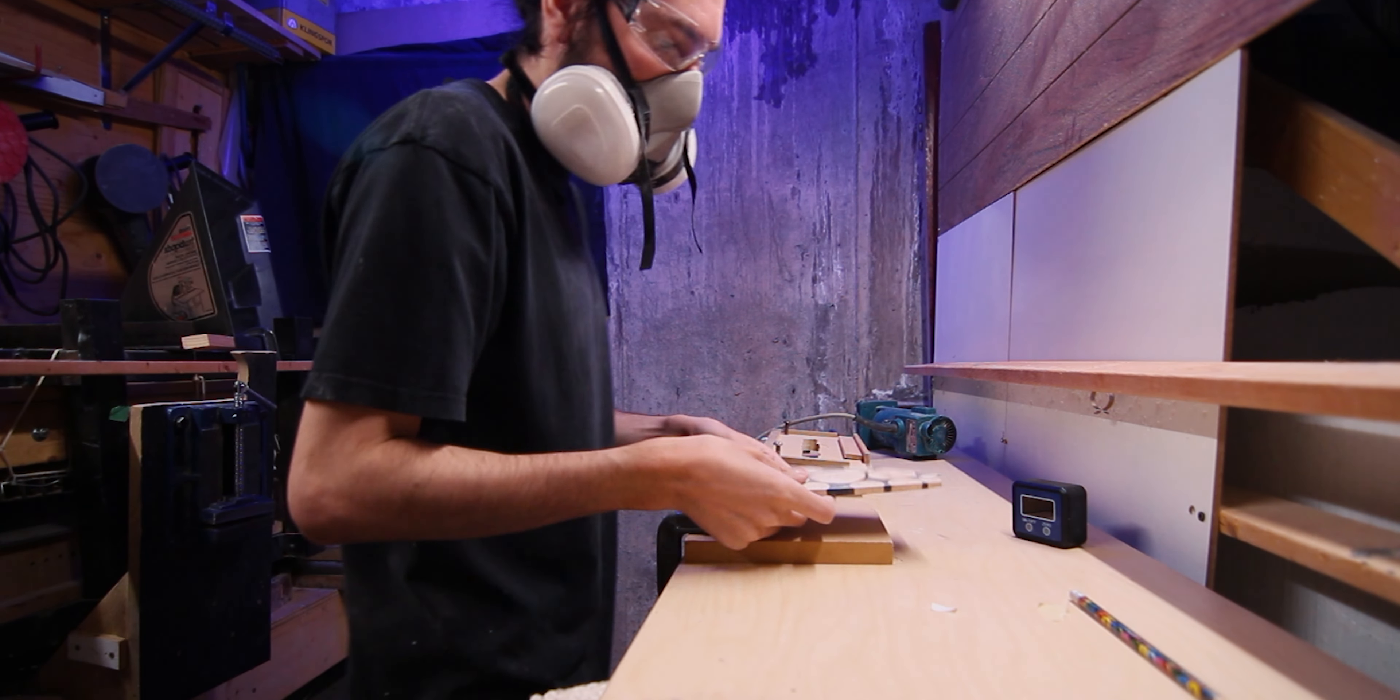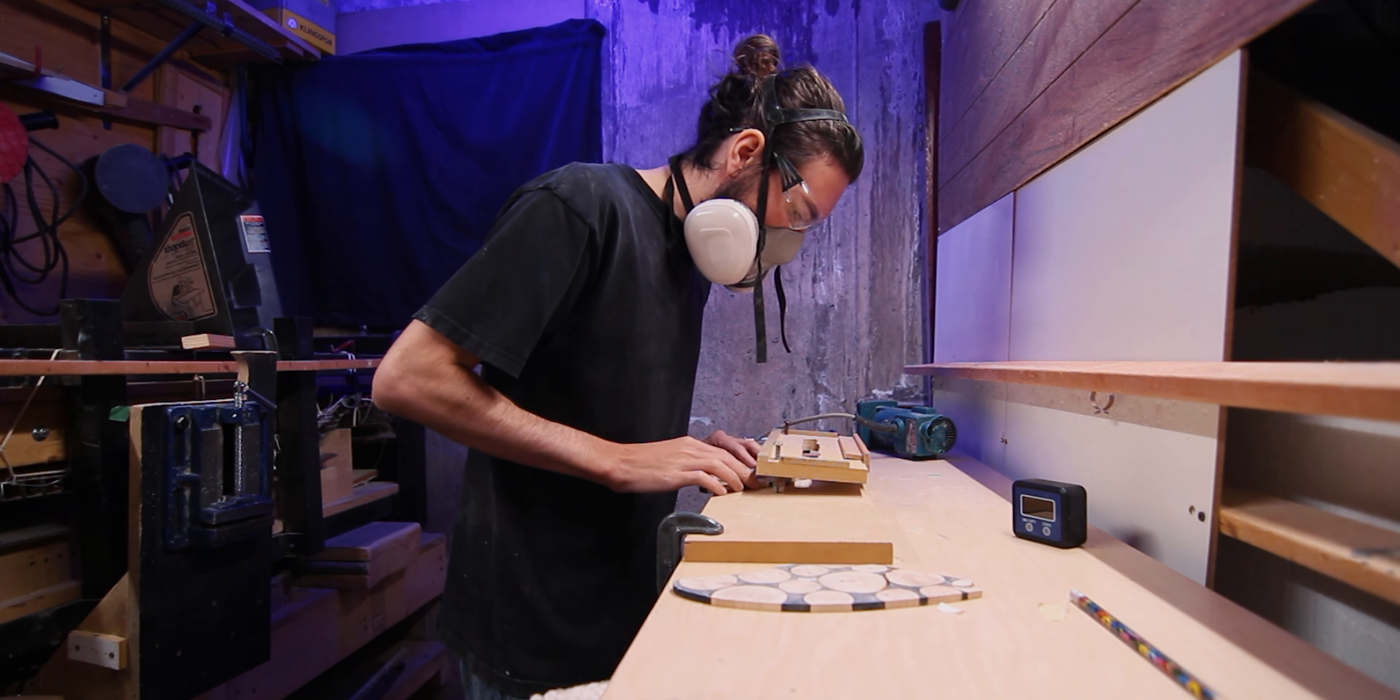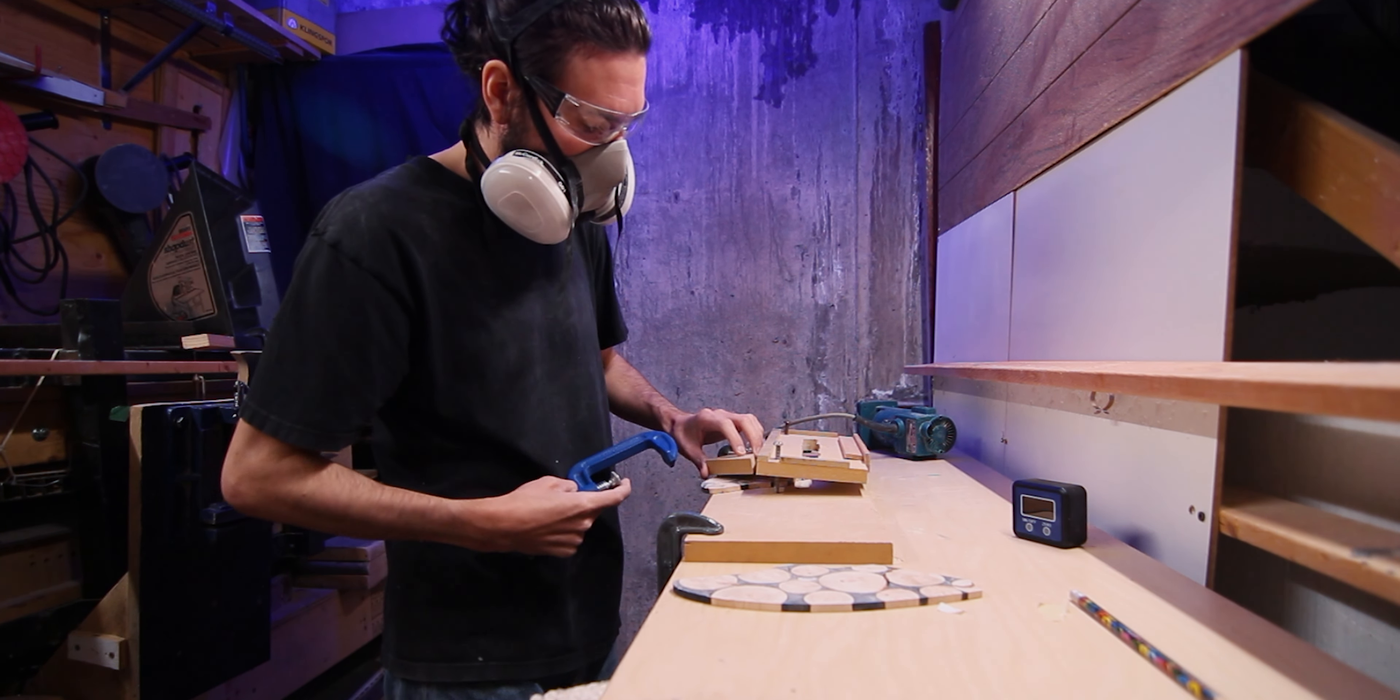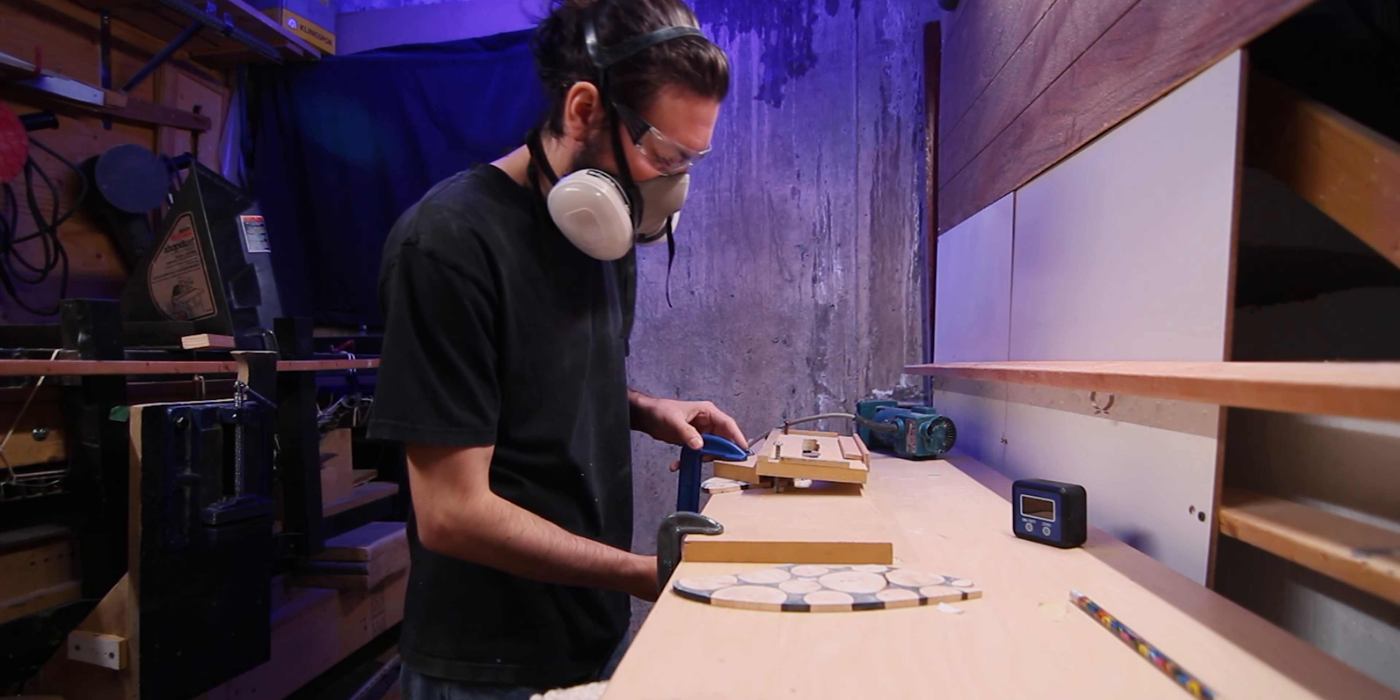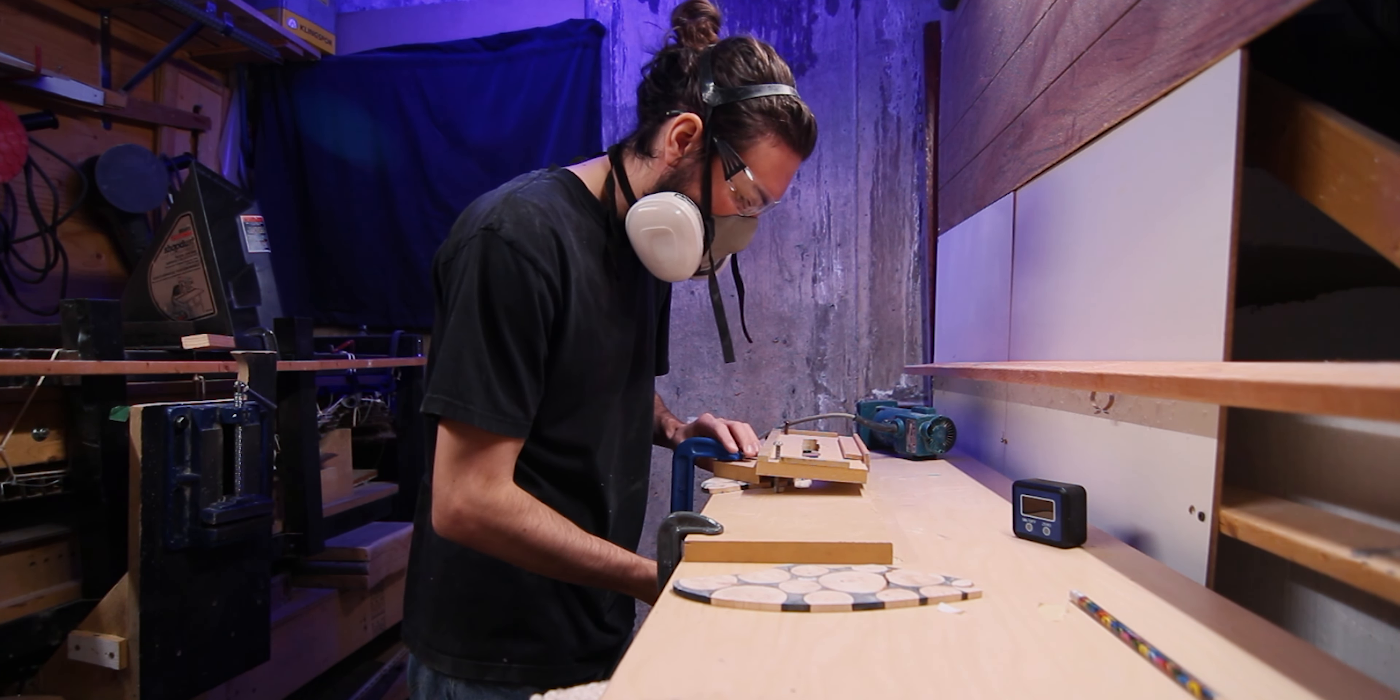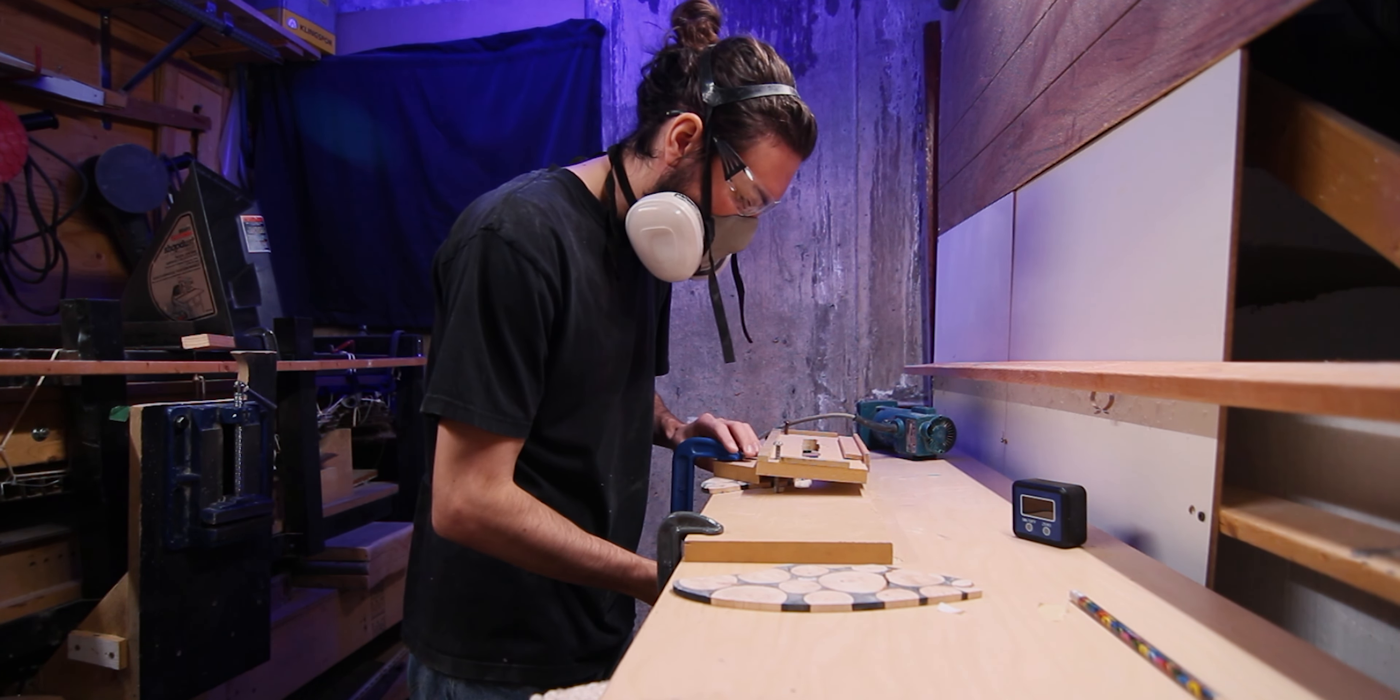One issue I had was the resin didn't bond great to the wood so the panels kept falling apart. This isn't a big issue, it just slows down the process a lot, luckily it's an easy fix. To fix this, I used a little bit of super glue and glued the panels back together. Once the glue cured, it was back to the router table.